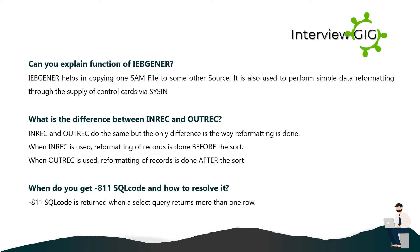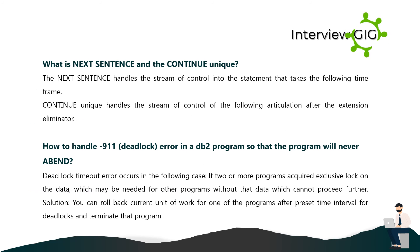When do you get -811 SQL code and how do you resolve it? The -811 SQL code is returned when a SELECT query returns more than one row. What is the difference between NEXT SENTENCE and CONTINUE? NEXT SENTENCE transfers control to the statement following the next period, while CONTINUE transfers control to the next statement after the scope terminator. How to handle -911 deadlock error in a DB2 program so that the program will never abend? A deadlock/timeout error occurs when two or more programs acquire exclusive locks on data needed by other programs, which cannot proceed. The solution is to roll back the current unit of work for one of the programs after a preset time interval for deadlocks, then terminate that program.